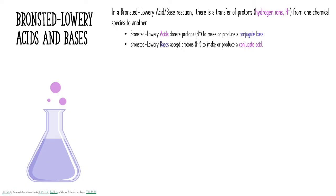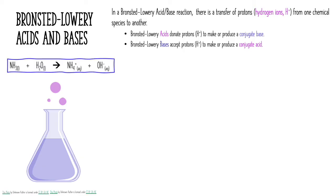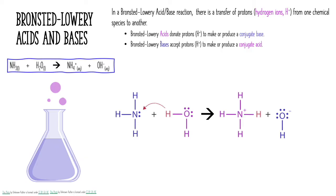Let's take a look at an example. Here's the overall reaction: ammonia reacting with water to produce the ammonium polyatomic ion and a hydroxide polyatomic ion. I'm going to put up the Lewis dot structures representing this reaction. Notice there's a little arrow pointing from a hydrogen on water to the ammonia molecule, meaning water is going to be transferring one of its hydrogens to ammonia. I want to use my Bronsted-Lowry definitions to label the acid and base in this reaction.